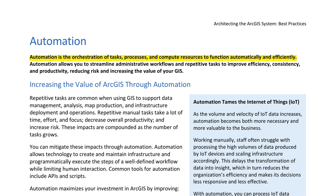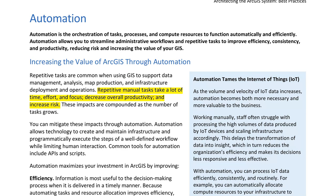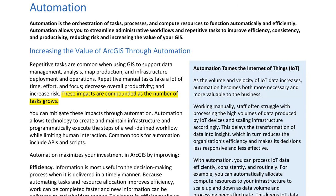Automation is the orchestration of tasks, processes, and compute resources to function automatically and efficiently. Automation allows you to streamline administrative workflows and repetitive tasks to improve efficiency, consistency, and productivity, reducing risk and increasing the value of your GIS. Repetitive tasks are common when using GIS to support data management, analysis, map production, and infrastructure deployment and operations. Repetitive manual tasks take a lot of time, effort, and focus, decrease overall productivity, and increase risk.